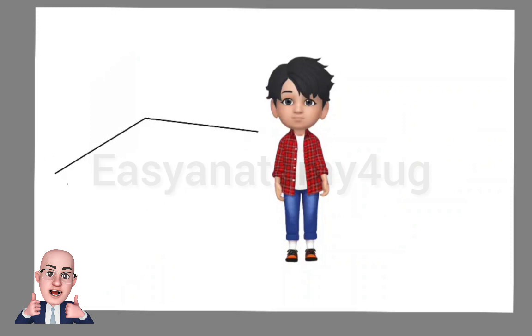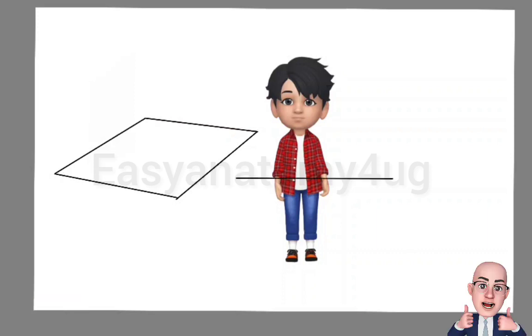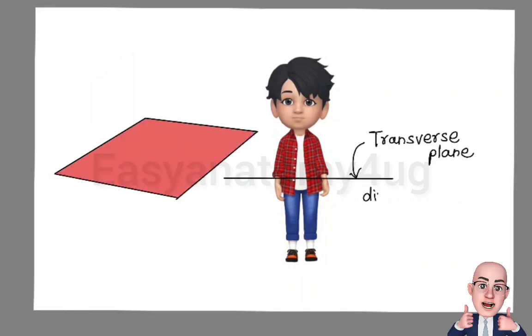Then we have the transverse plane. This transverse plane divides the body into upper and lower half, or we also call it superior and inferior.